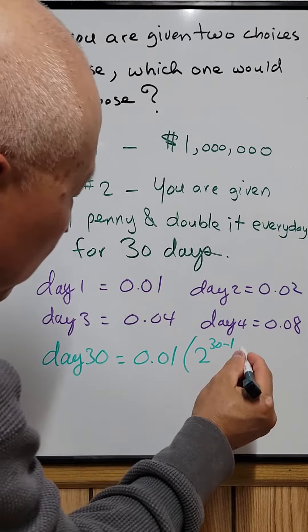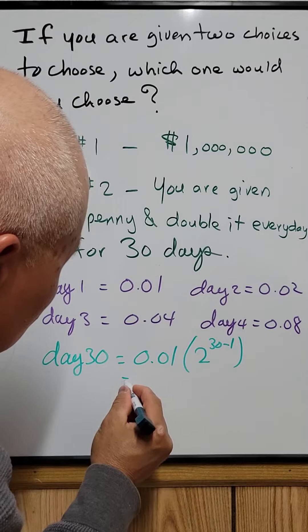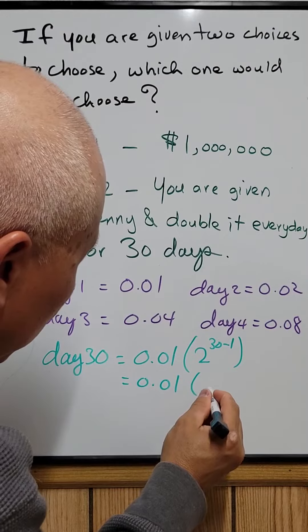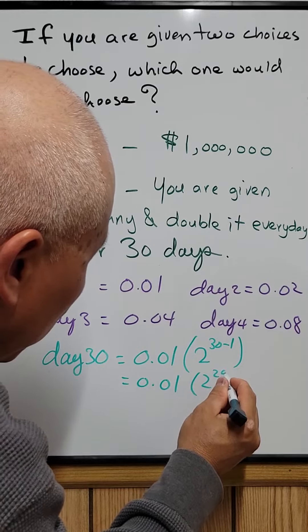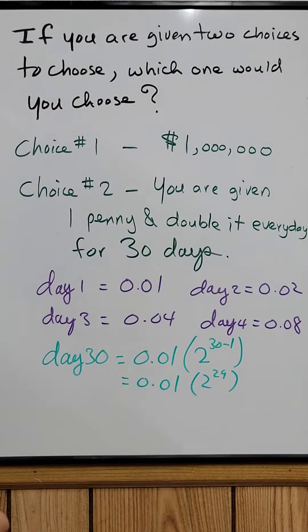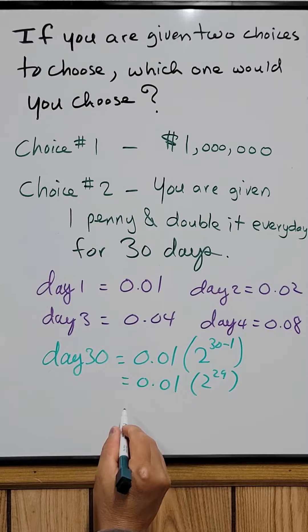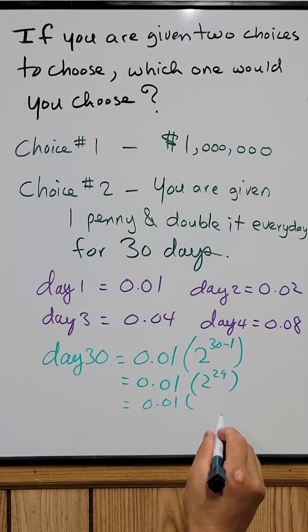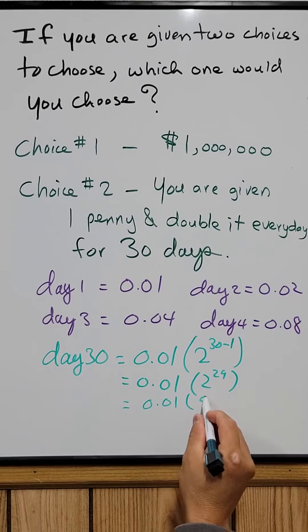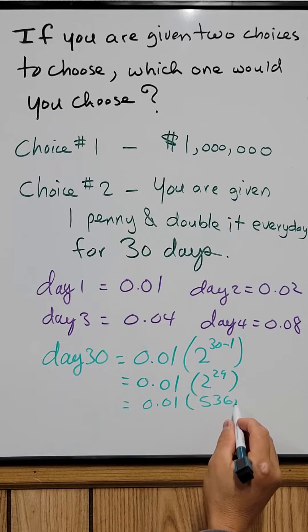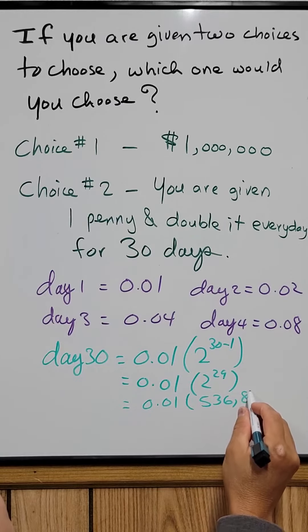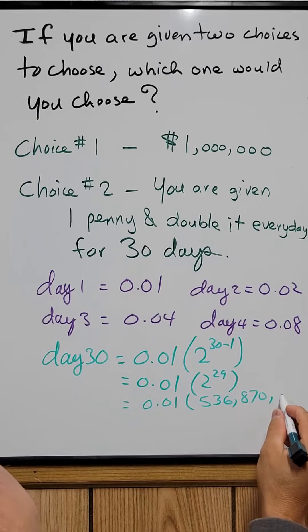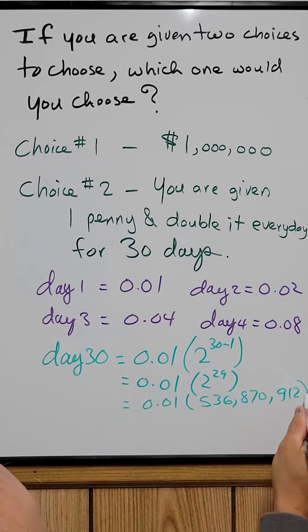So it's equal to 0.01 times 2 to the 29th power. So you plug into the calculator: 2 to the 29th would be 536,870,912.